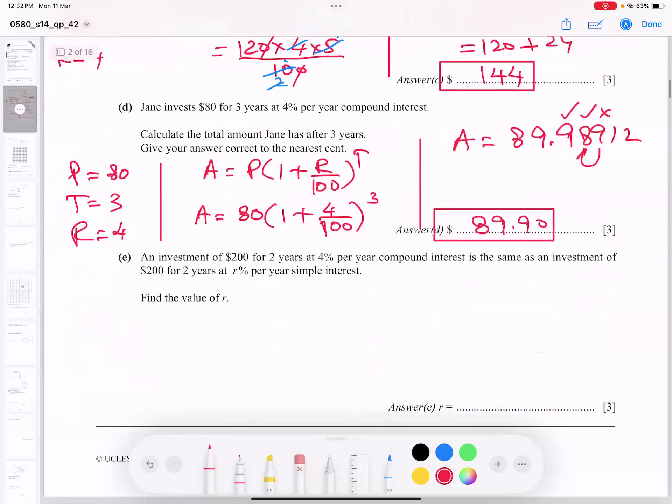Last part is interesting part for three marks. Investment of $200 for two years for rate of interest, compound interest. So again, we check it carefully. This is money for compound interest. This is money for simple interest. Money is same. So principle for both values is $200. Remains same. And time is also for both is two years. So time is also two years. Rate of interest here for compound interest, for simple interest is something different. So let's apply compound interest.